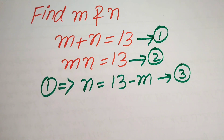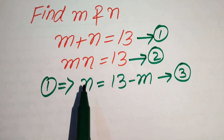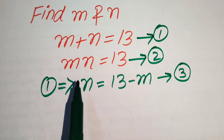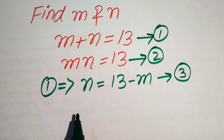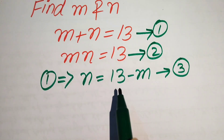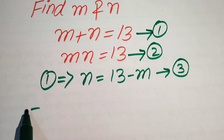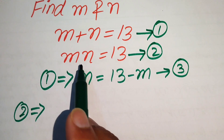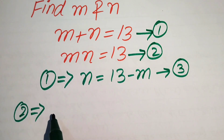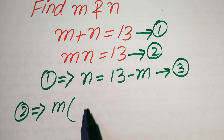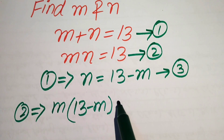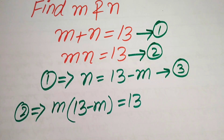When we substitute the value of n into equation number 2, it becomes quadratic in the variable m. We substitute n equals 13 minus m into equation number 2, so equation number 2 becomes m times (13 minus m) equals 13.